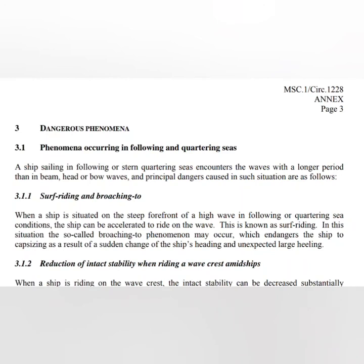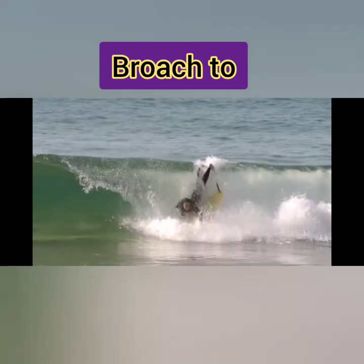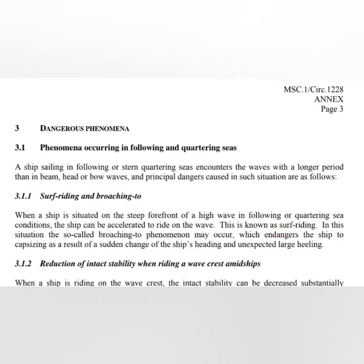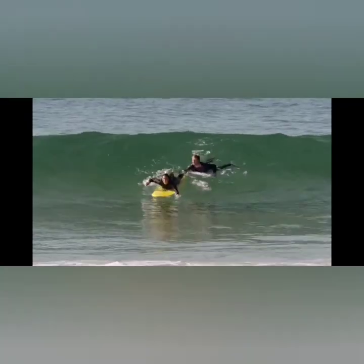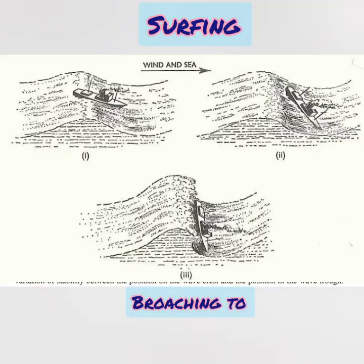A dangerous situation may occur when there is a following or quartering sea and the waves are quite long. The first risk is surf riding and broaching to. What really happens is that the ship gets accelerated to ride on a wave — that is surf riding — which may actually increase your ship's speed. However, the danger is that if there is a sudden change of the ship's heading, the ship will take a large heeling angle and may even capsize.